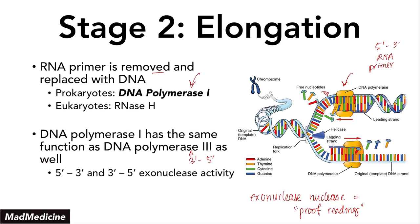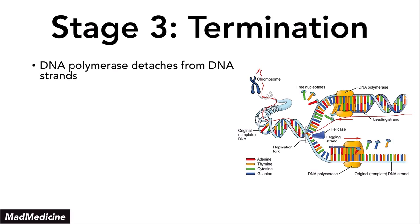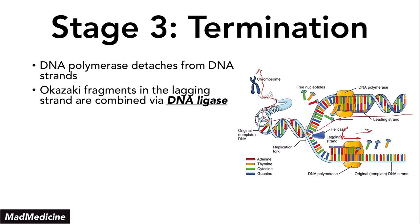During the termination stage, DNA replication proceeds all the way to the end of the template, and then DNA polymerase detaches. The lagging strand Okazaki fragments, which are not completely joined to each other, must be combined. These segments are joined together by an enzyme called DNA ligase, which combines the Okazaki fragments to each other. That is essentially all that happens in prokaryotes.